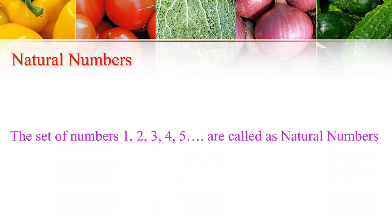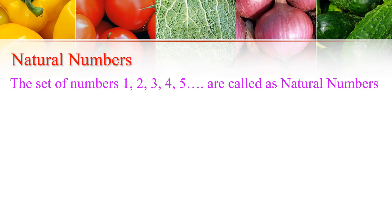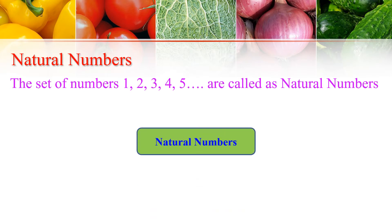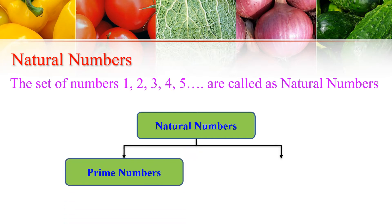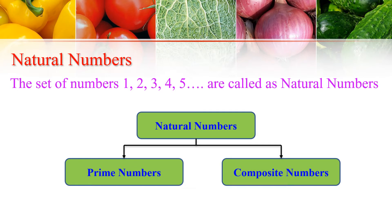Before we begin, let us understand what we mean by Natural Numbers. The set of numbers 1, 2, 3, 4, 5, etc. are called Natural Numbers. Natural Numbers can be divided into two categories which are called Prime Numbers and Composite Numbers.